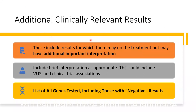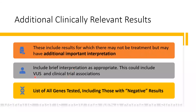Additional clinically relevant results may not be relevant to treatment but may have some additional important interpretation, like reporting VUS — variants of unknown significance — and information about clinical trials. You should also include a list of all the genes tested, including those with negative results.